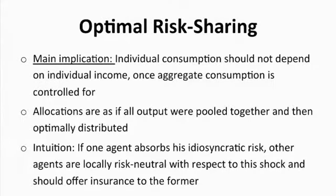The idea is individual consumption should actually not depend on individual income, stunningly, once you control for aggregate consumption. It's as if all these households lived in a big risk syndicate and they were just pooling all their grain in one big pile, and then depending on shares — some people are more equal than others — they get a fraction of the grain. The pile of grain can go up and down with village aggregate shocks, but controlling for those shocks, your contribution has nothing to do with what you take out.